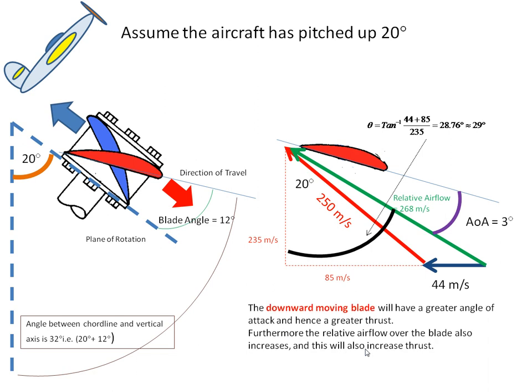So, the downward moving blade will have a greater angle of attack, hence greater thrust. And furthermore, the relative airflow over the blade also increases, and this will also increase the thrust.